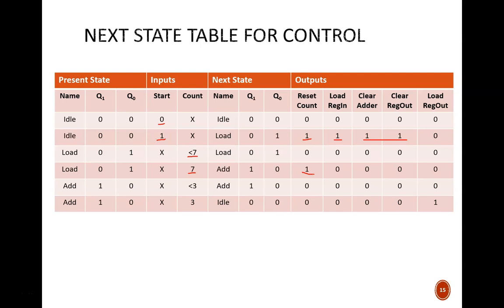But, why use a count of seven? Because eight clock cycles are needed to load in the eight bits, and the count begins at zero.